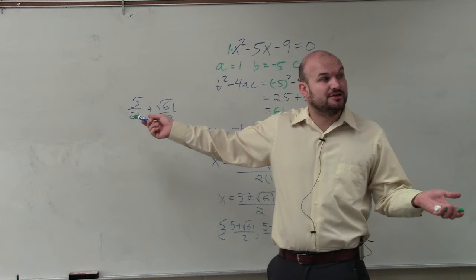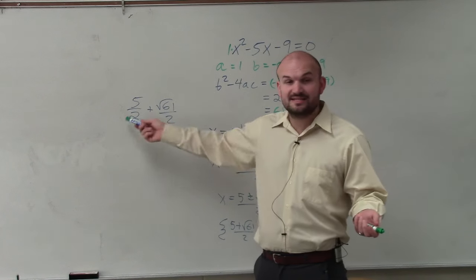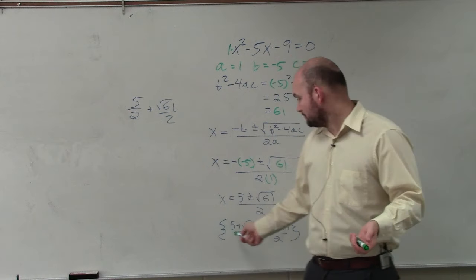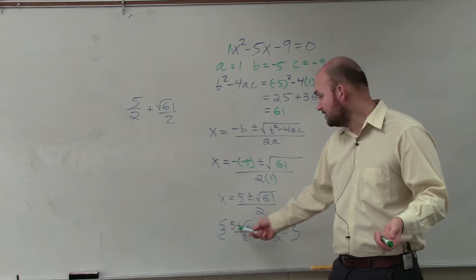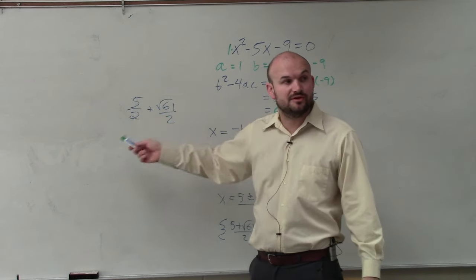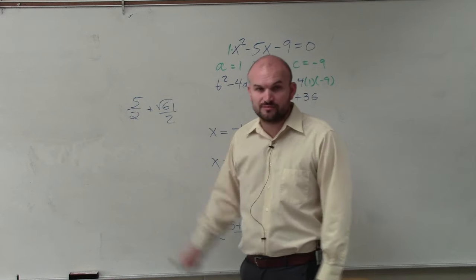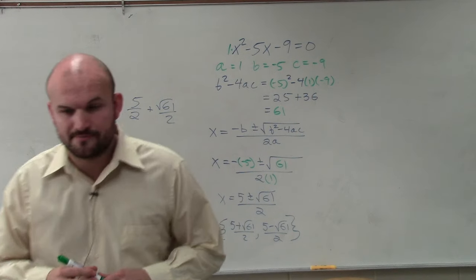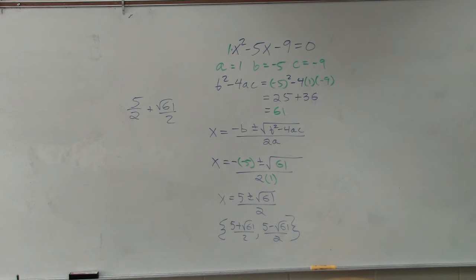You can also divide the two into both of those. And if it can be simplified, usually that's what we do. In this case, they can't be simplified. You can't divide the two into the five or the two into square root of 61. So leaving it like that is perfectly fine. However, if it is something you can divide into, that's another way to write those numbers or the solutions. OK? All right.